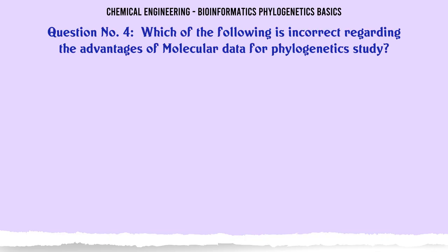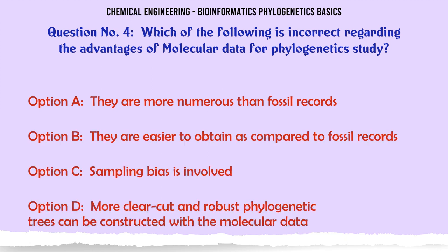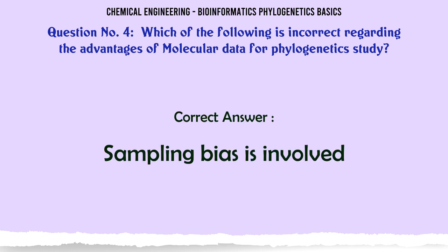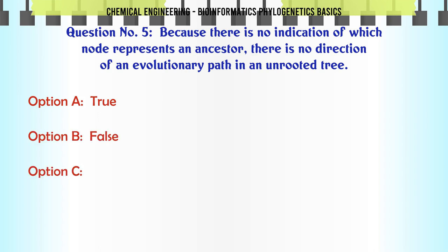Which of the following is incorrect regarding the advantages of molecular data for phylogenetics study? a. They are more numerous than fossil records. b. They are easier to obtain as compared to fossil records. c. Sampling bias is involved. d. More clear-cut and robust phylogenetic trees can be constructed with the molecular data. The correct answer is: Sampling bias is involved.